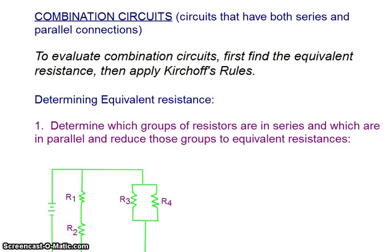We've looked at simple series combinations, and we've looked at simple parallel combinations. And now what we're going to look at are circuits that have both series and parallel within the same circuit. So these are called combination circuits.